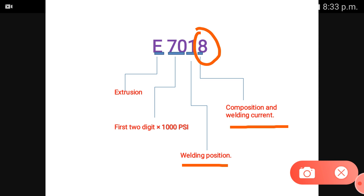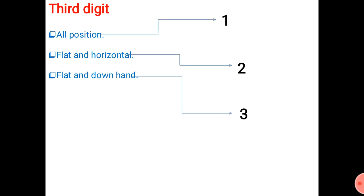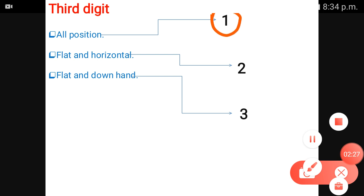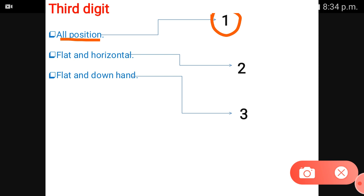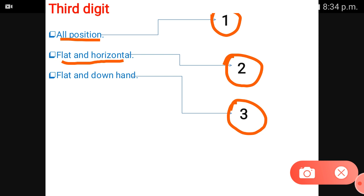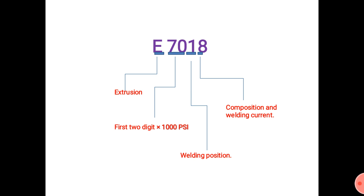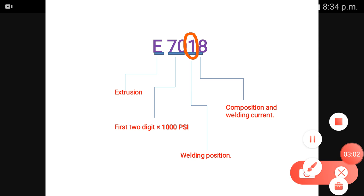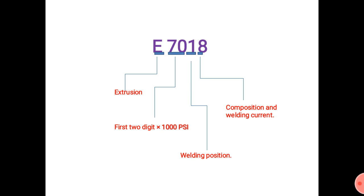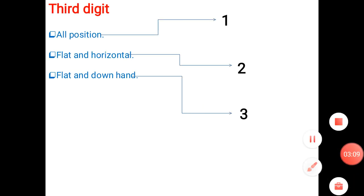For the third digit: certain values mean you can weld in a flat and horizontal position only. Another value means you can weld in any position — all positions.